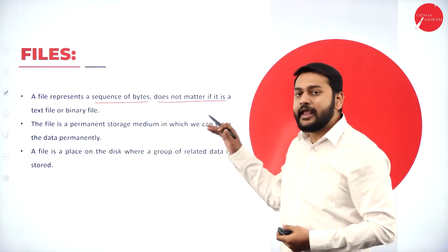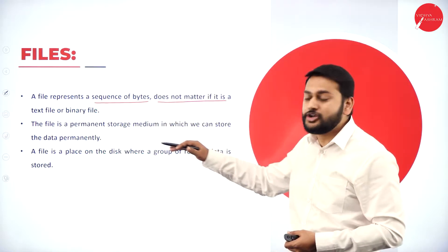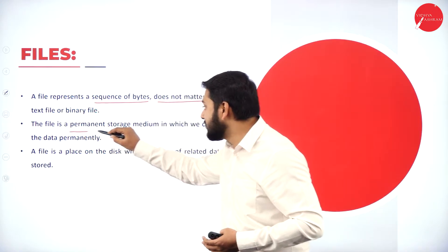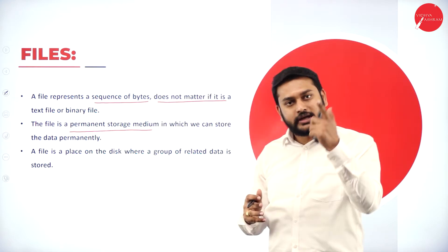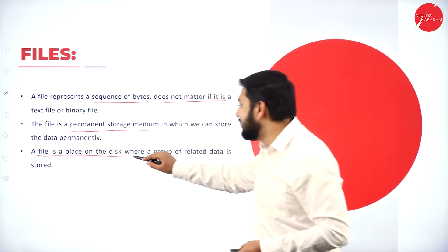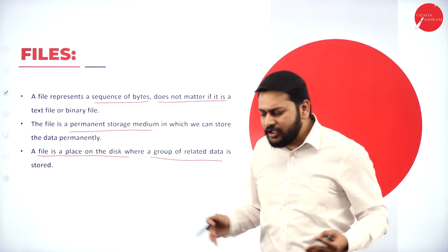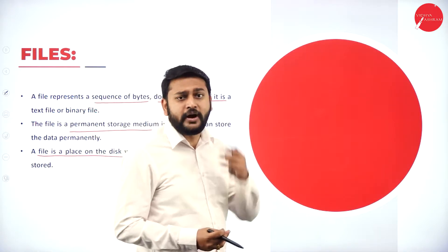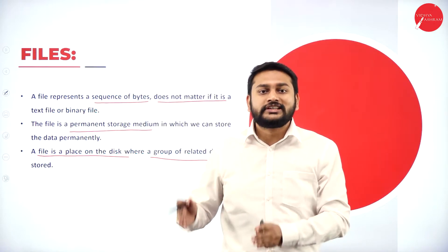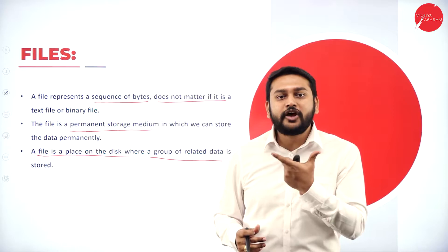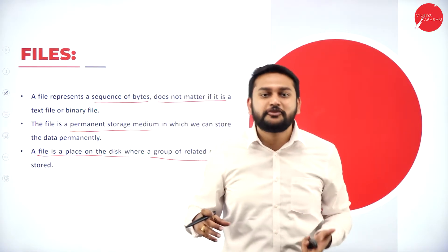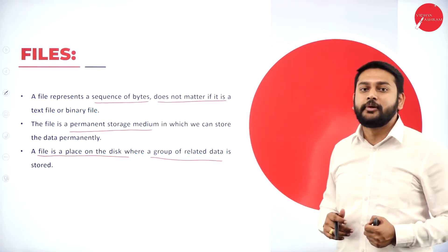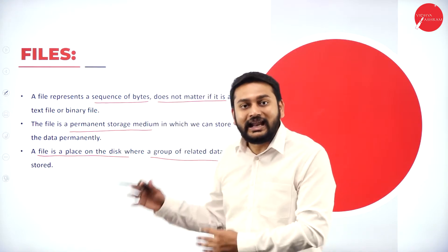The next point is that a file is a permanent storage medium. Whatever data I have, I will be storing it permanently in a file. A file is also a place on the disk where I store a group of related data. For example, if I'm storing student records, I should store only related data — not unrelated information.